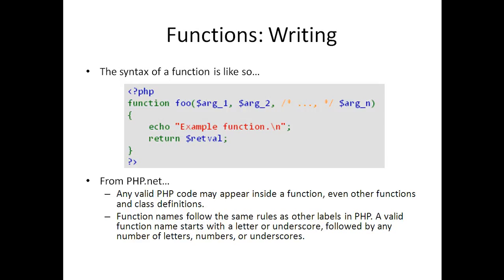Here is the syntax for writing functions. You have the keyword 'function', then the function name — 'foo' in this example — followed by argument one, argument two, all the way up to argument n. Any valid PHP code may appear inside a function, even other functions and class definitions. Function names follow the same rules as other labels in PHP: a valid function name starts with a letter or underscore, followed by any number of letters, numbers, or underscores — the exact same rules as variable naming conventions.